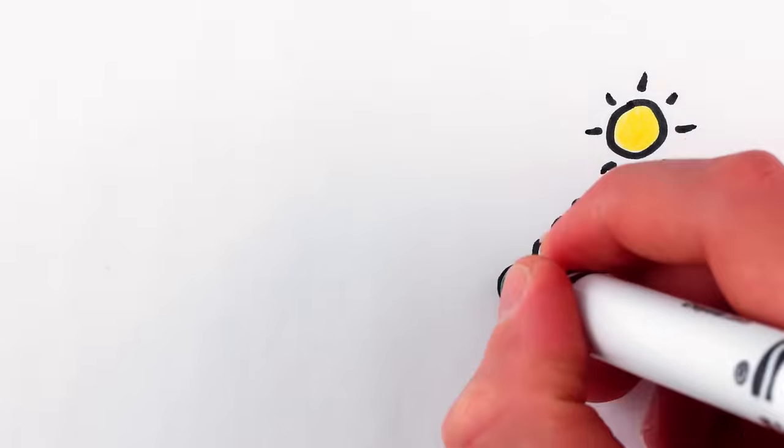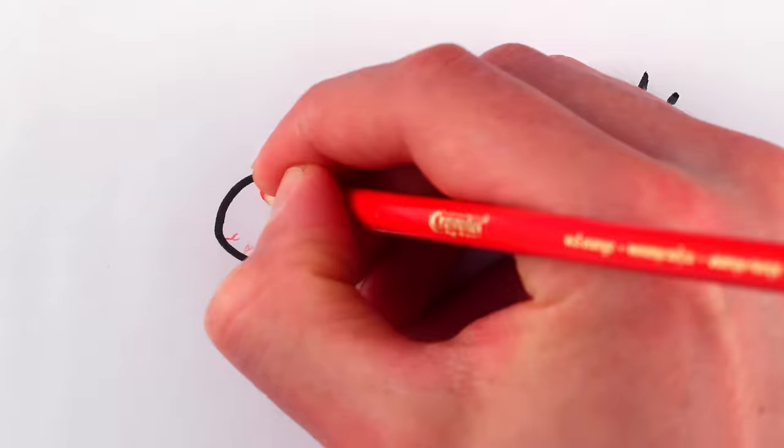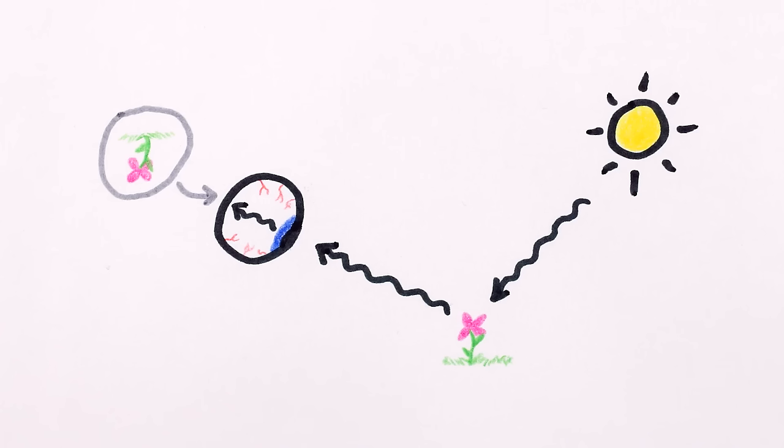Light travels outwards from a source, bounces off of objects in its path, travels into your eye and onto your retina, where it forms an image.